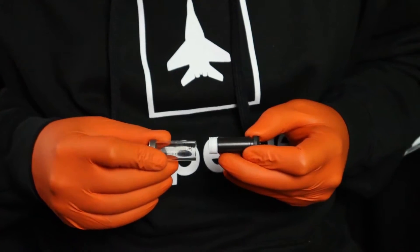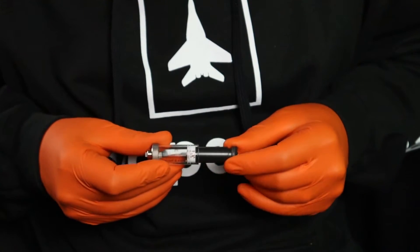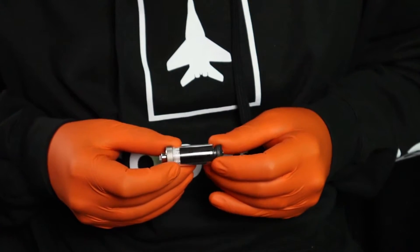Assemble in the reverse order as removed and ensure that all connectors are tight, especially the lure lock connections between the syringe and valve and needle and PTFE. Carefully reinsert the syringe plunger into the syringe body by pushing along the direction of movement. Pushing the plunger at an angle or twisting it may break the syringe glass.